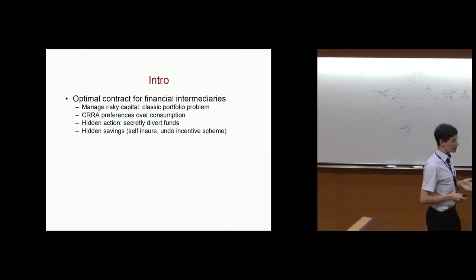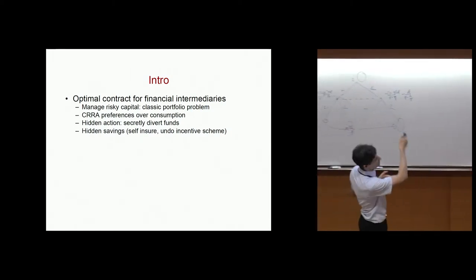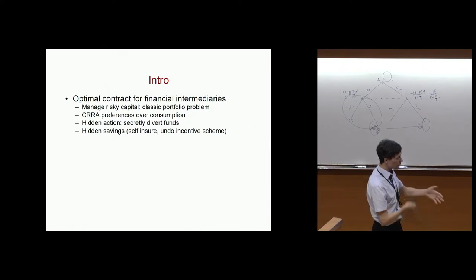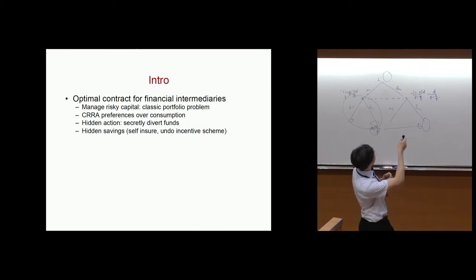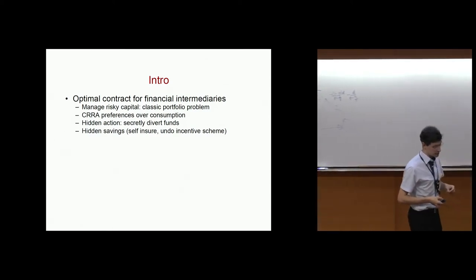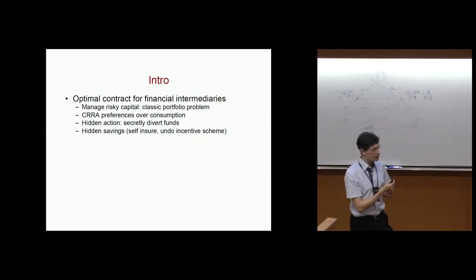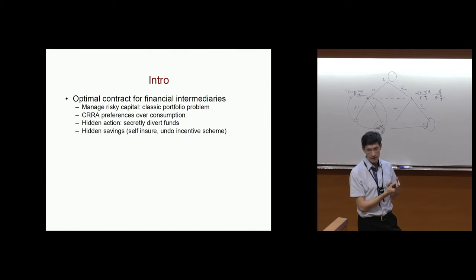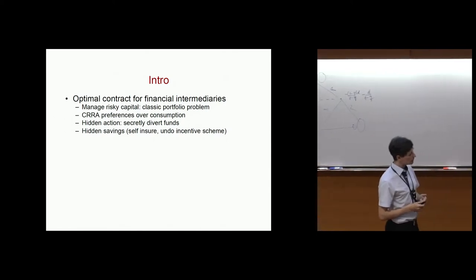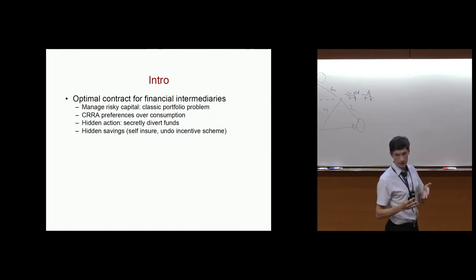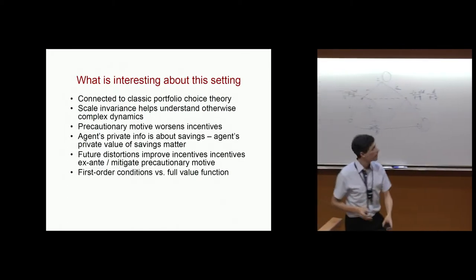There are two hidden actions. One is that the agent can divert some of the resources to consume perks or get some benefits. Another action is basically about savings. A big part of this is about savings — how this fits the earlier theme is that the agent is going to have private information about his savings. This is dynamic adverse selection: the agent has this private information, the principal has to take it into account, and the fact that the agent has this private information is going to generate some distortions in the optimal contract.